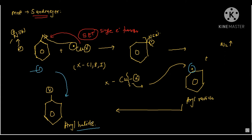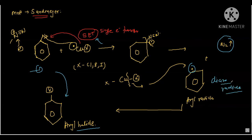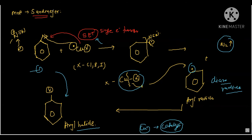The mechanism involves the transfer of a single electron from copper to the diazonium — that is SET, Single Electron Transfer, by the copper toward the nitrogen. A molecule of nitrogen gas is released, and after nitrogen leaves, a diazo radical — that is an aryl radical — is formed. This aryl radical then reacts with the copper halide to regenerate copper. Copper acts as a catalyst here because it is regenerated at the end of the reaction.